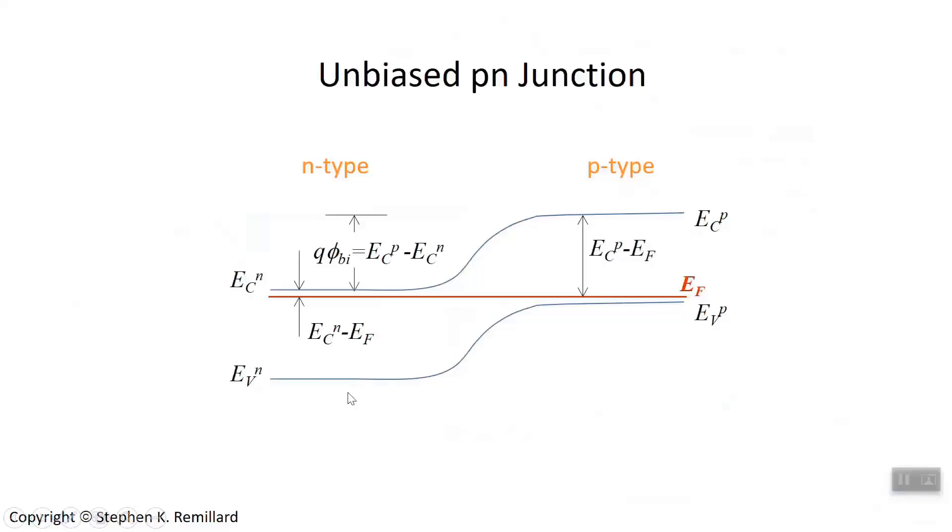I'll remind you of the energy level diagram of a P-N junction. On the N-type, the energies are lower, because these are electron energies. Over in the P-type, bands bend upward. This is in thermal equilibrium, and the Fermi level has to be closer to the conduction band on the N side and closer to the valence band on the P side. The Fermi energy has to be a horizontal line, and the step you go up is that built-in potential.